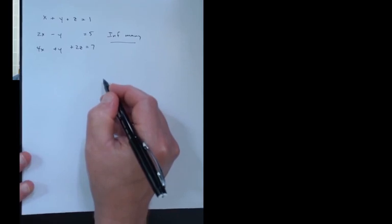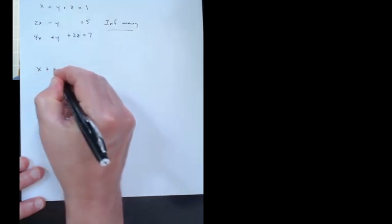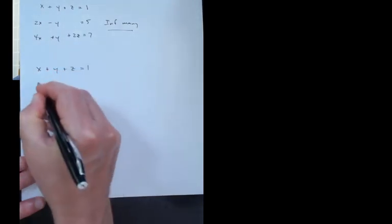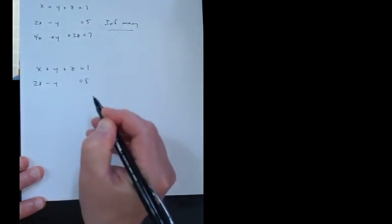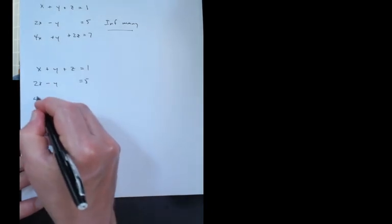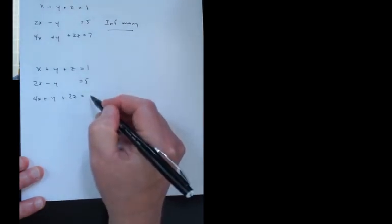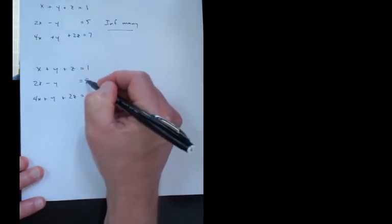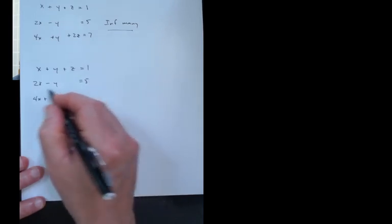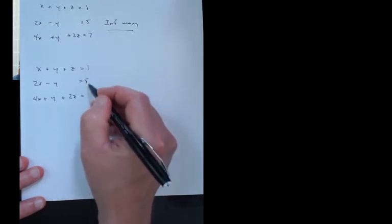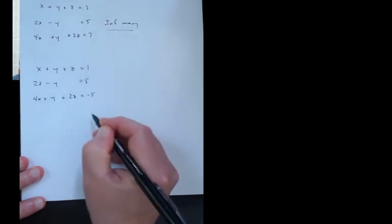Okay, now if you want to have no solutions, then you want something like this. You want to do basically the same thing. x plus y plus z equals one. Two x minus y equals five. Just a couple of equations that I made up. And then over here, I'm going to do four x plus y plus two z. And then I'll put anything but seven here. So as long as I don't take twice the first row and add the second row, if I do something other than seven here, I will get a contradiction. Because the left side is twice the first row plus the second row. The right side is not. So if I put anything but seven there, how about minus five? No solutions.